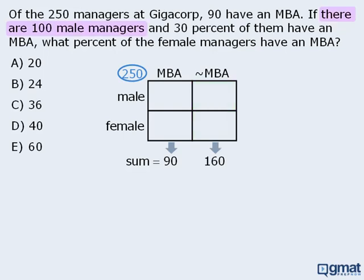Next, we are told that there are 100 male managers, so the sum of those two boxes must be 100. Since there are 250 managers altogether and 100 are male, the remaining 150 managers must be female, so the sum of those two boxes must be 150.